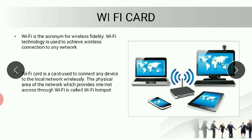Next is the Wi-Fi card. Wi-Fi stands for wireless fidelity. Wi-Fi is a technology used to achieve a wireless connection to any network. We have Wi-Fi in our homes, so we don't need any wire. Wireless means there is no need for a physical wire. Whenever we want to connect, we use a hotspot. The physical area of a network which provides internet is called a hotspot. It is wireless — there is no wire in it.